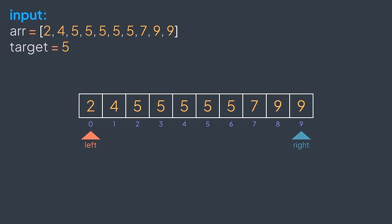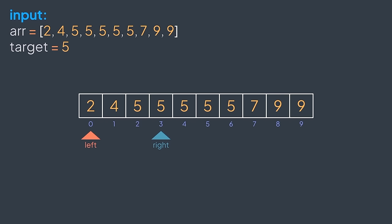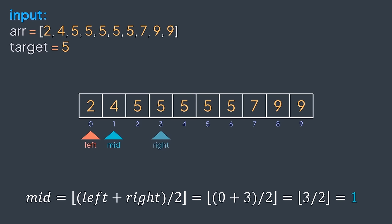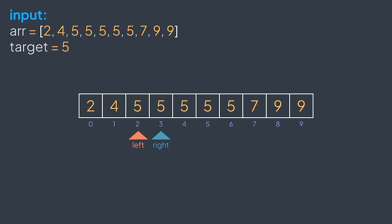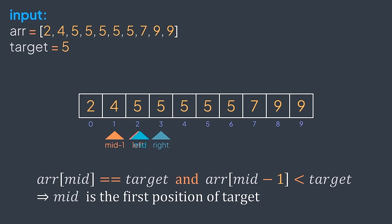Let's trace through our example. Left and right start at first and last element of r. Mid = (left + right) / 2 = 4. r[4] equals target, but r[3] is not smaller — so mid is not the starting position. The first position can only be in the left part. Continue: mid = (0+3)/2 = 1. r[1] < target, so starting position is in the right part. Continue: mid = (2+3)/2 = 2. r[2] == target and r[1] < target — mid is the first position, we return it.